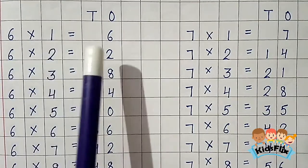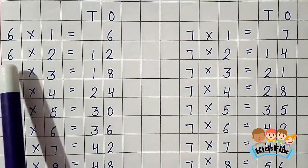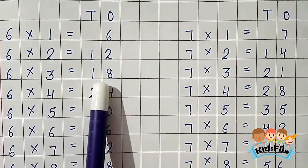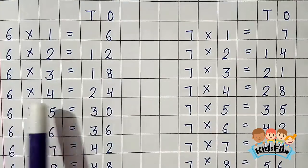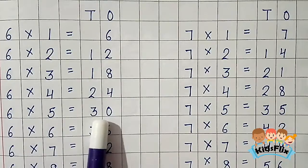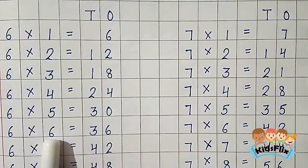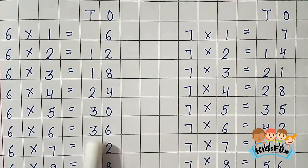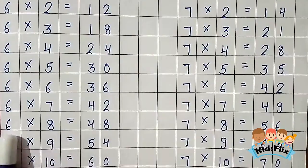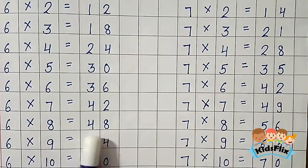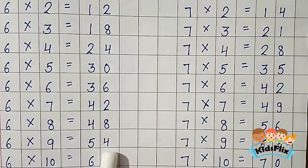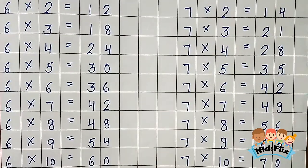6 1s are 6. 6 2s are 12. 6 3s are 18. 6 4s are 24. 6 5s are 30. 6 6s are 36. 6 7s are 42. 6 8s are 48. 6 9s are 54. 6 10s are 60.